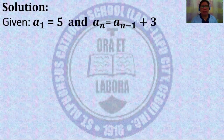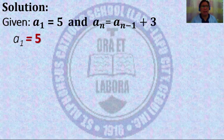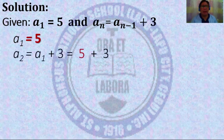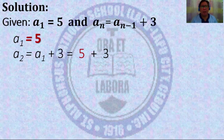So again, given the first term a_1 = 5, and the recursive formula a_n = a_{n-1} + 3. You copy the first term, which is a_1 = 5. Then for the second term, a_2 = a_1. Since n = 2, n minus one is one, so a_2 = a_1 + 3 = 5 + 3, which is equal to eight.